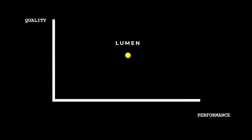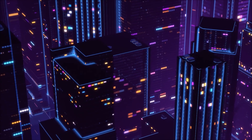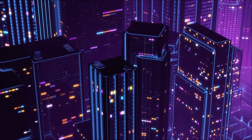If we create an overview comparing performance to quality, you can structure the different lighting systems as follows: Lumen takes the golden middle, balancing performance with visibly convincing light. Screen space and no global illumination are the power horses of performance. Ray tracing and path tracing give you amazing results but eat up performance heavily. Hopefully you now have a better overview of all the different illumination methods and learned something new.